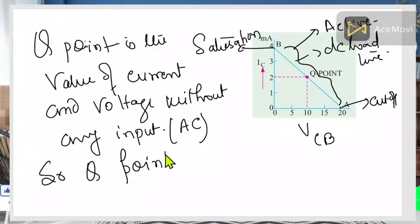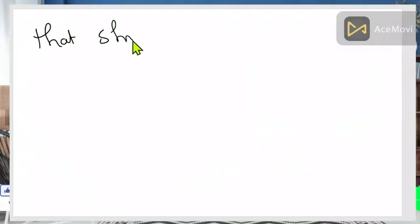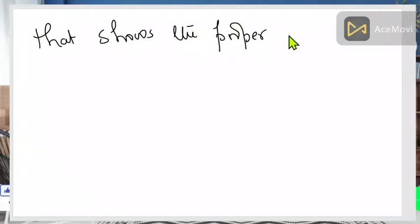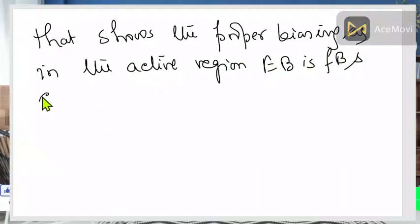The Q-point is not an ordinary point — you cannot place it arbitrarily anywhere on the line. The Q-point is the point that shows proper biasing in the active region, where the emitter-base is forward biased and the collector-base is reverse biased.